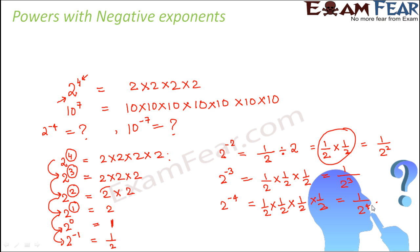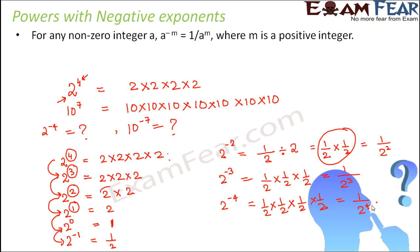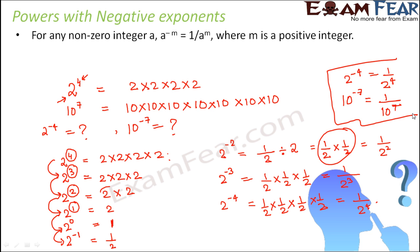So with this exercise, we understand that for any non-zero integer A — in this case that non-zero integer is 2 — A to the power minus M is equal to 1 by A to the power M, where M is a positive integer. That is, 2 to the power minus 4 can be written as 1 by 2 to the power 4. So 2 to the power minus 4 equals 1 by 2 to the power 4, and 10 to the power minus 7 equals 1 by 10 to the power 7. This is how we relate negative exponents with positive exponents.